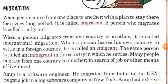Now we will discuss about migration. When people move from one place to another with a plan to stay there for a long period, it is called migration. A person who migrates is called a migrant. When a person migrates from one country to another, it is called international migration. When a person leaves his own country to settle in a foreign country, he is called an emigrant. The same person is called an immigrant in the country in which he settles.